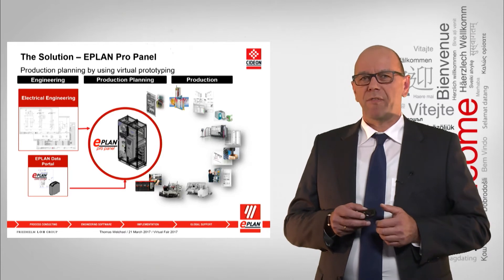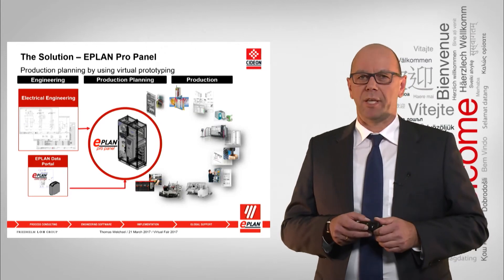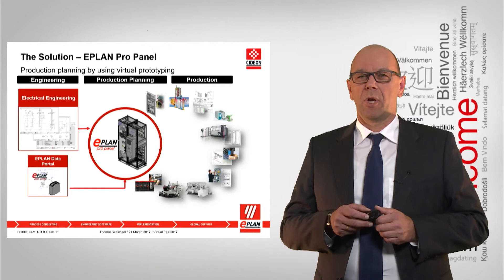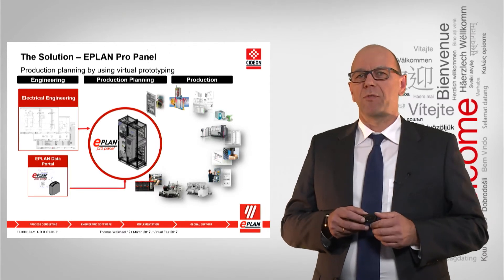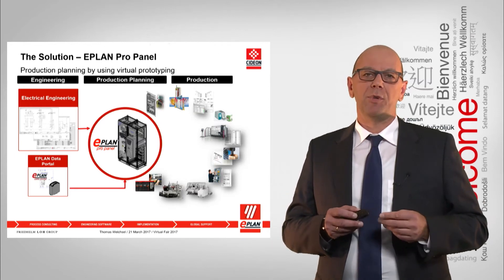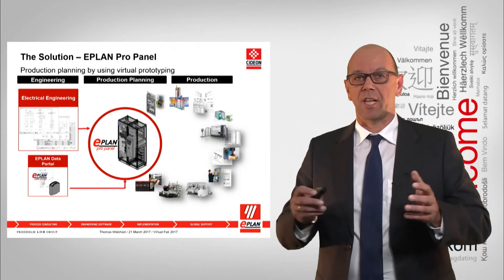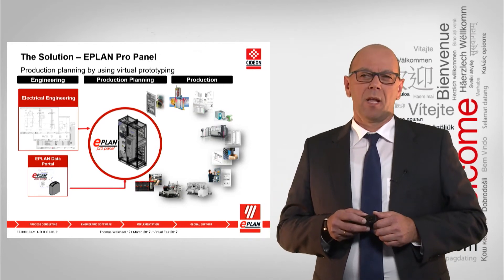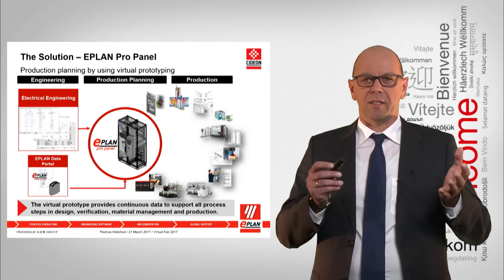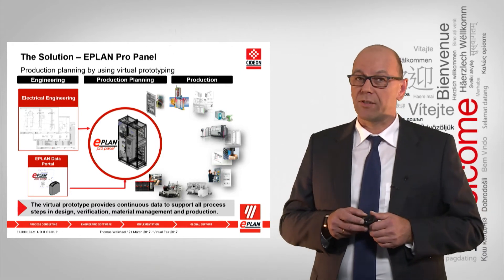Last but not least, assembly drawings are available, and one of the most interesting aspects is the ability to provide wiring data. Why so interesting? Because wiring takes more than 40% of the complete production time of such a cabinet. Based on the virtual prototype, you can provide the necessary lengths for each connection, including wire end preparation and labeling — which can be used to prefabricate wires automatically or to do this manually at the cabinet in the shop floor. The virtual prototype provides continuous data to support all process steps: design, verification, management, material management, and production itself.